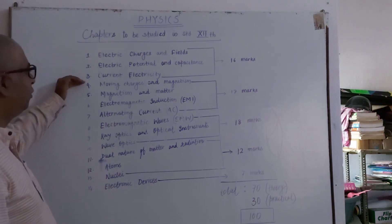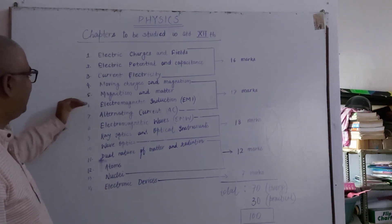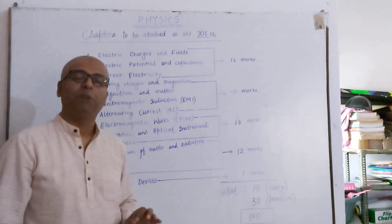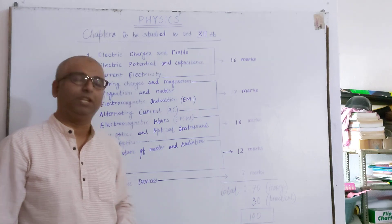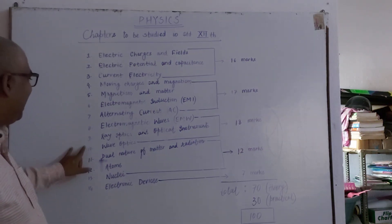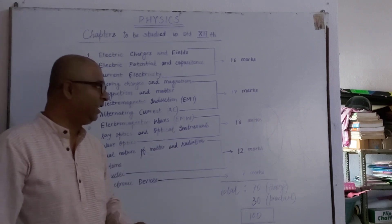Likewise, Chapter 4, 5, 6 and Chapter 7—from these four chapters, questions of 17 marks will be asked in your board examination. From Chapter 8, 9 and 10, questions of 18 marks will be asked.